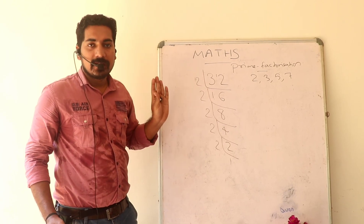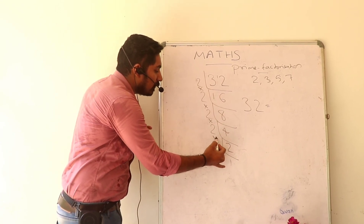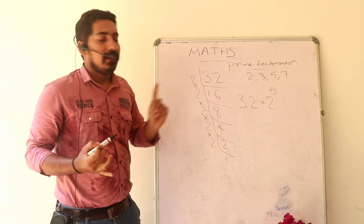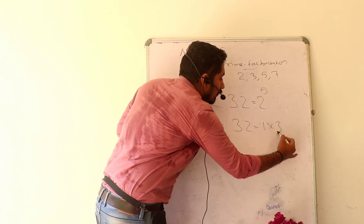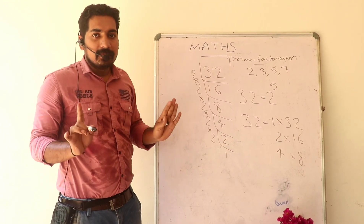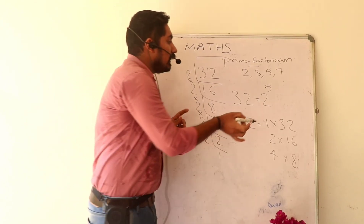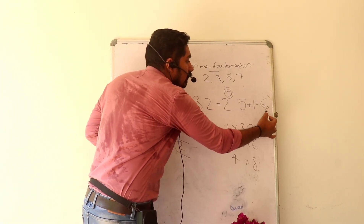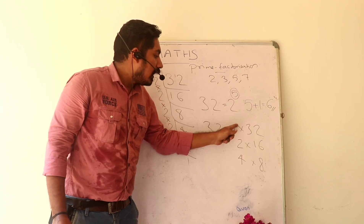Now we do it again. How many times do we factor? We have 2 raised to 5, because: 1 to 32, 2 to 16, 4 to 8 — three pairs. So 32 = 2 raised to 5. The number of divisors is the power plus 1: 5 + 1 = 6.